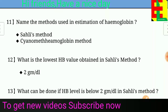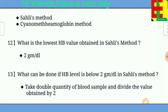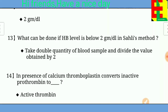Question number twelve: What is the lowest hemoglobin value obtained in the Sahli method? Answer: 2 g per deciliter. Question number thirteen: What can be done if HB level is below 2 g per deciliter in the Sahli method? Answer: Take double the quantity of blood sample and divide the value obtained by 2.